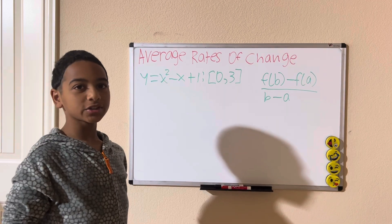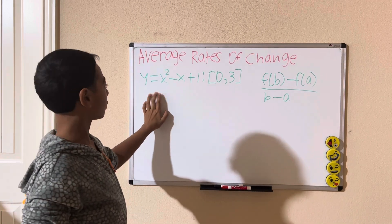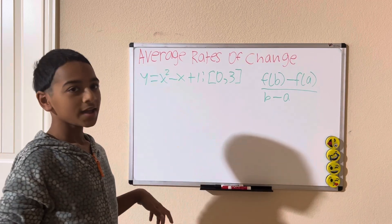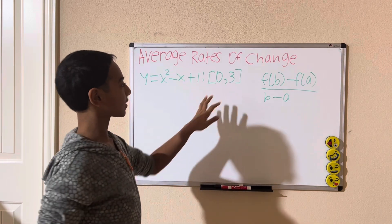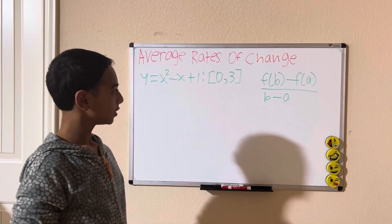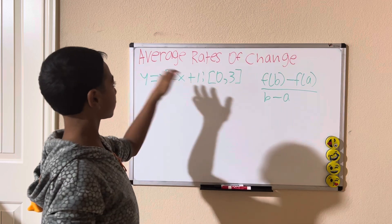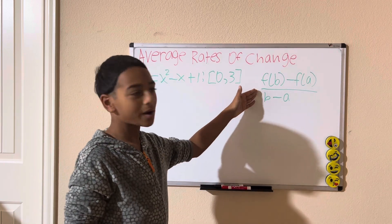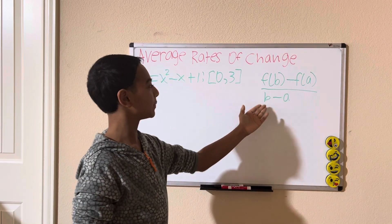So, the average rate of change. We have this equation: y equals x squared minus x plus 1, at these two intervals, 0 and 3. So, the formula for average rate of change is f of b minus f of a divided by b minus a.